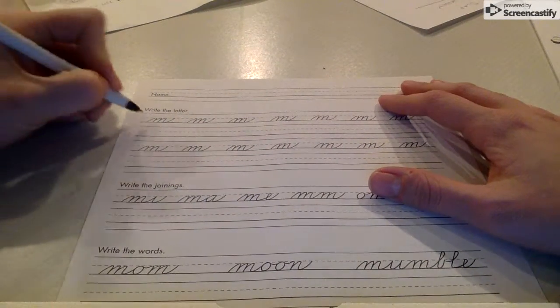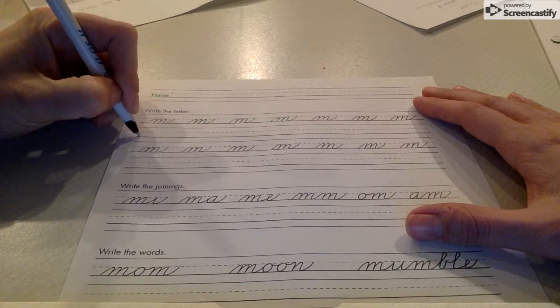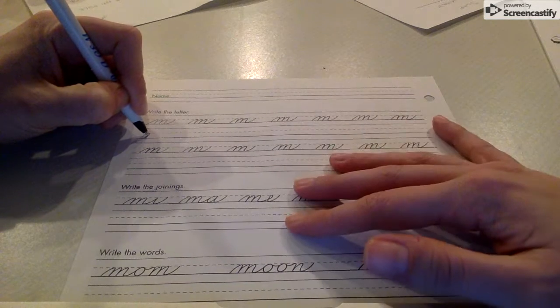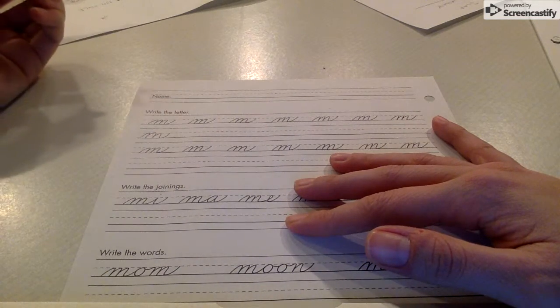All right, here's our M. The cursive M looks like it has a bunch of humps because we have that hump to begin, and then we have our two humps for an actual M and our tail.